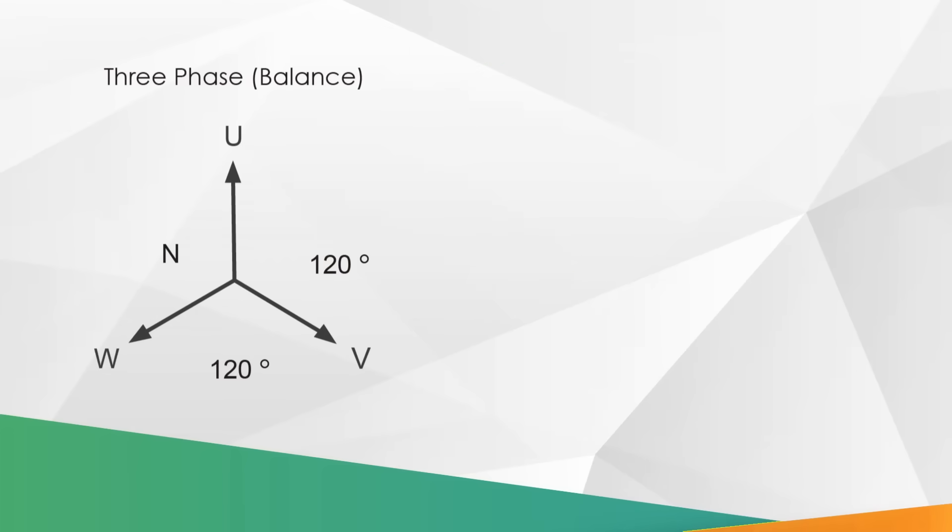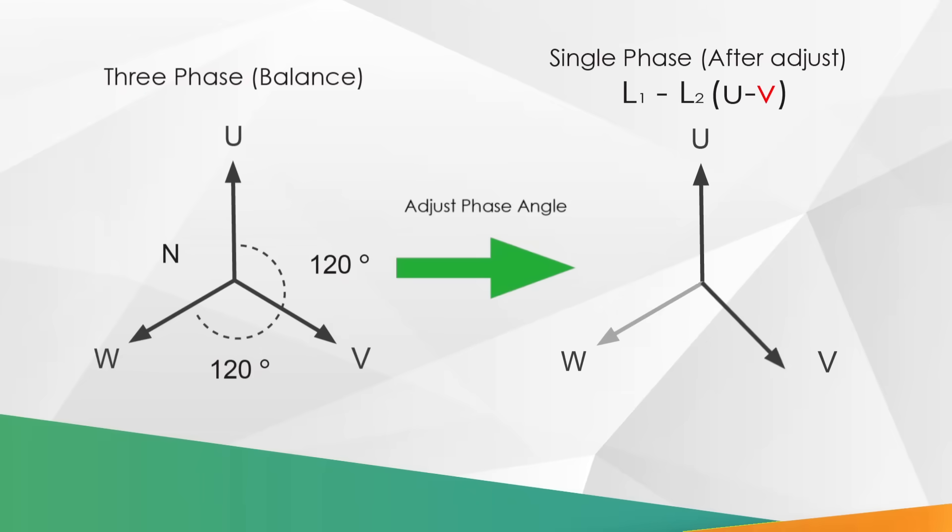Generally speaking, when three-phase is under balanced situation, the phase angle between phase to phase is 120 degrees. To test single-phase three-wire load, you have to adjust the angle to 180 degrees and connect the two-wire line-to-line at the output terminal.